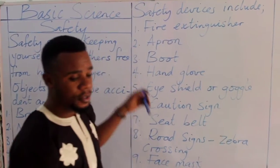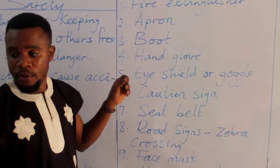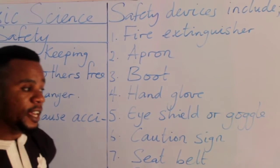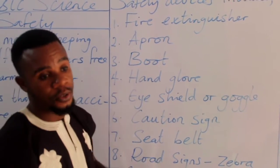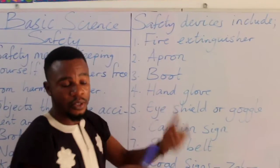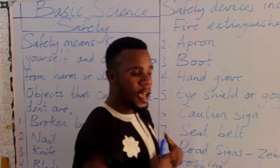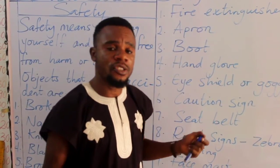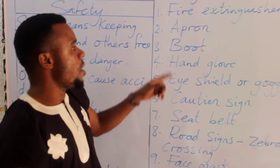Now we have the apron. This apron is used by those in the kitchen while cooking — you put it on to avoid being stained by what you are cooking. When something falls on the apron, it won't stain your inner clothes. When you see your mom putting on an apron, it is not fashion — it is used as a safety device.